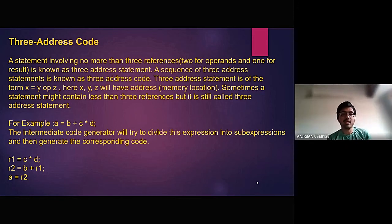For example, we have taken a statement like a equal to b plus c multiplied by d. The intermediate code generator will first try to divide this expression into sub-expressions and then generate the corresponding code. At the beginning, we have taken from the right-hand side c multiplied by d and assign the value to r1. Then, we have calculated b plus r1 and assign the value to r2. And at the end, we have assigned the value of r2 in the variable a.